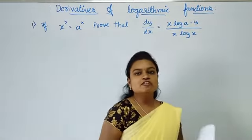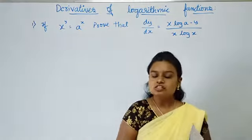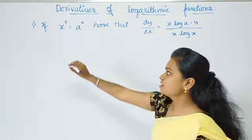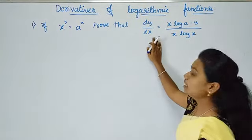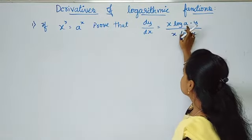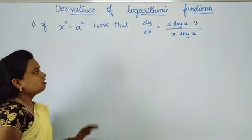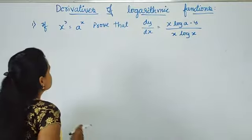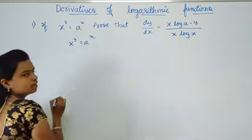Welcome back dear students. In our last session we discussed derivatives of logarithmic functions. Today I am going to continue that topic. The first problem is: if x power y is equal to a power x, prove that dy by dx is equal to x log a minus y divided by x log x.